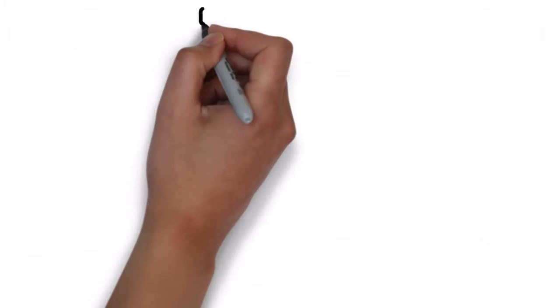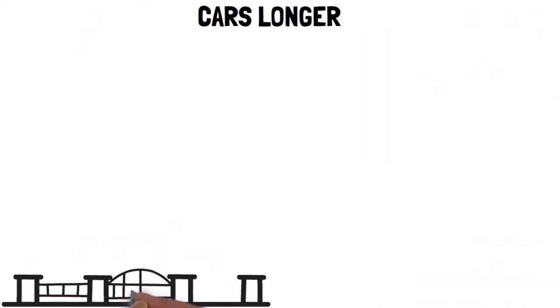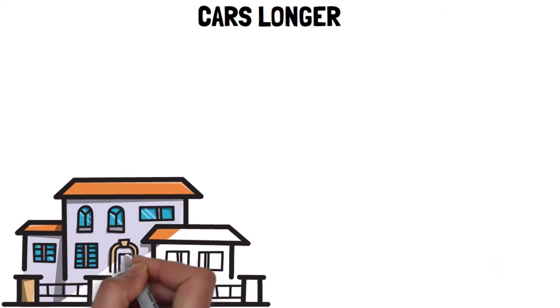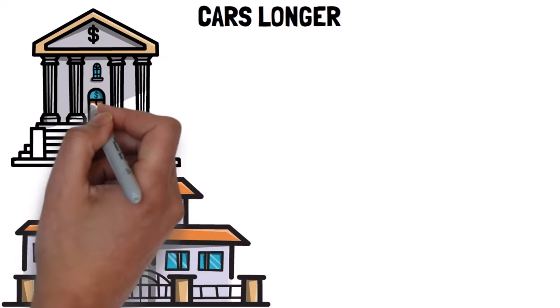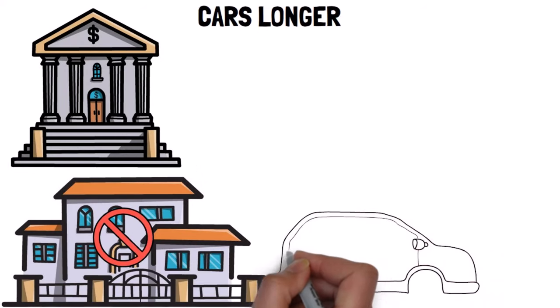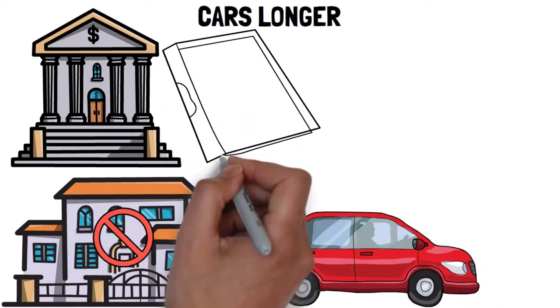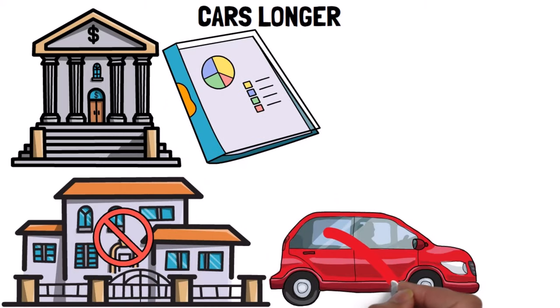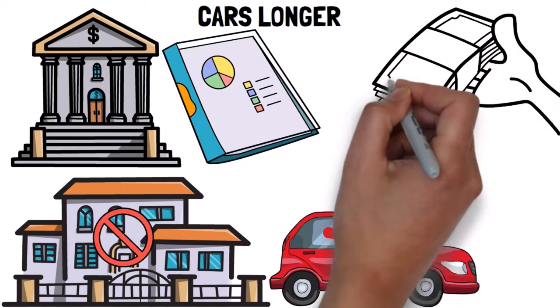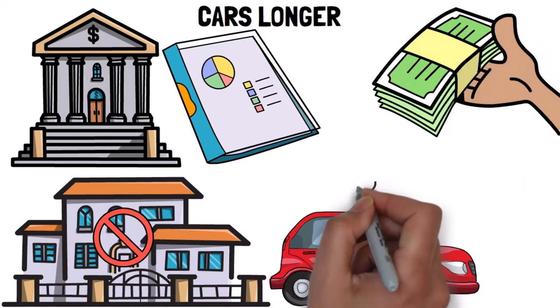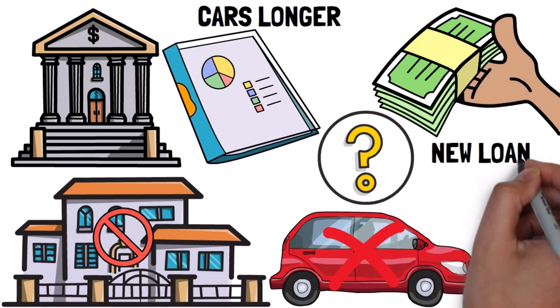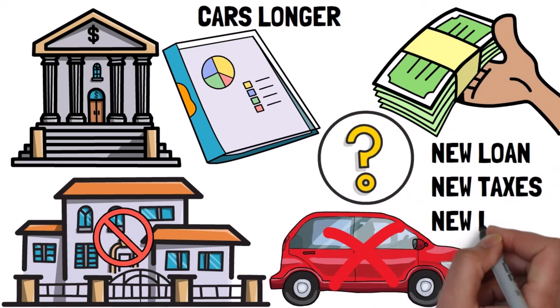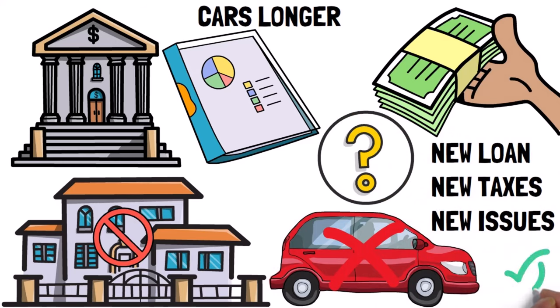Next, the third point is about keeping cars longer. Similar to how homeowners don't move because they have a low, fixed-rate mortgage, car owners are doing the same. A report from July mentions that people are holding onto their cars for a longer time, which is why there aren't as many available. If you can manage your current car payments, why switch to a new car with a new loan, new taxes, and new issues when you can just keep the car you already own?